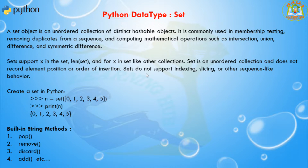There are currently two built-in set types in Python: set and frozenset. The set type is mutable — its contents can be changed using methods like add() and remove(). Since it is mutable, it has no hash value and cannot be used as a dictionary key or as an element of another set.